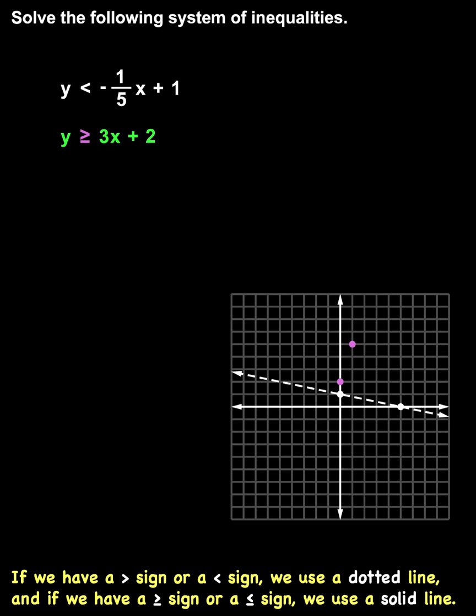And notice that this inequality uses a greater-than or equal-to sign, so we connect the points with a solid line, rather than a dotted line.